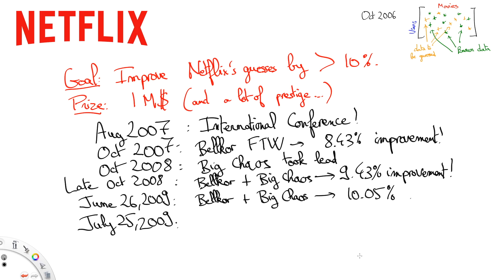To everyone's surprise, on July 25, an outsider team, the Ensembled team, which was a merger of the team's Grand Prize Team and Opera Operations and Vanderlei United, broke Bellcore's Pragmatic Chaos record. They managed to improve Netflix's algorithm by 10.09%. Since the two teams had now achieved the 10% improvement requirement, they would now have to face the last final phase of the Netflix competition.